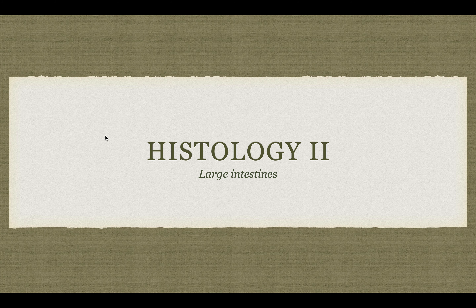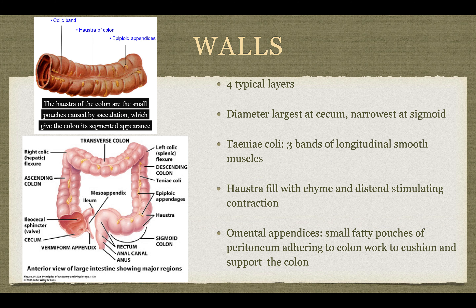Welcome back. Today we're going to continue into the large intestines. There are going to be the four typical alimentary layers. The diameter is largest at the cecum and narrowest at the sigmoid colon.